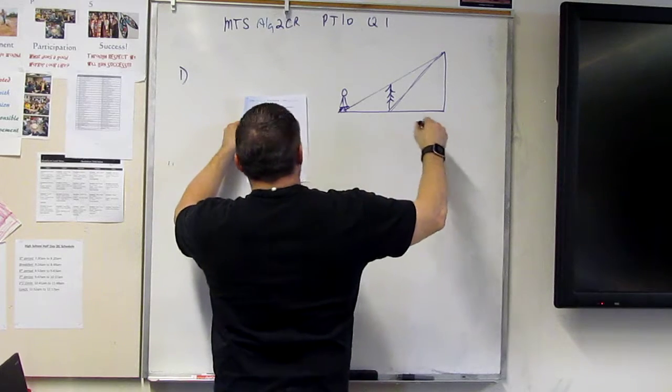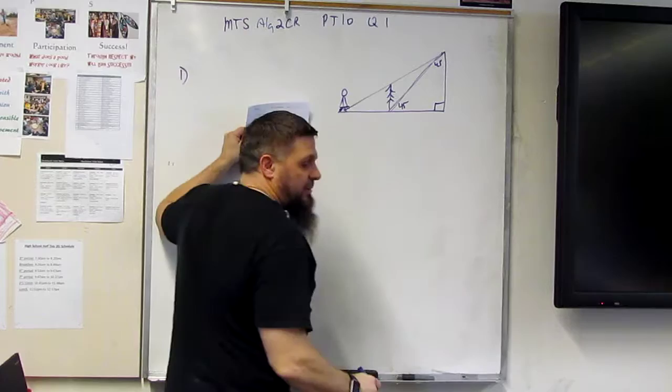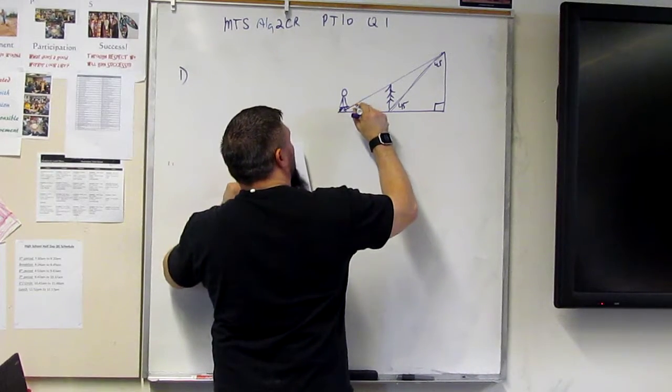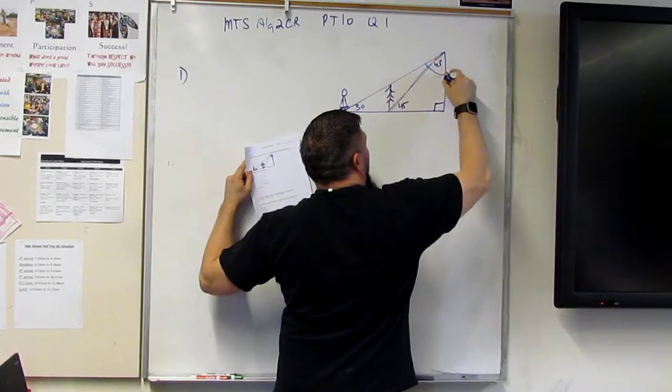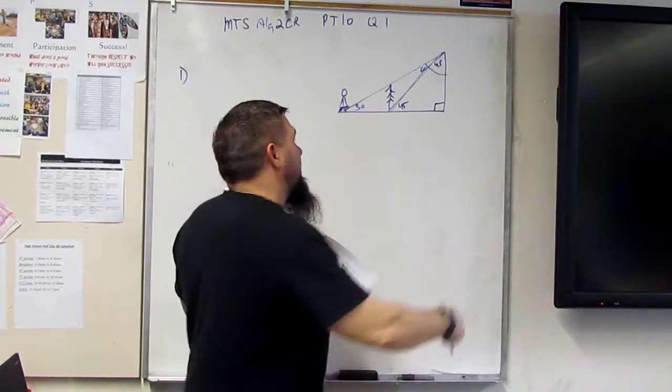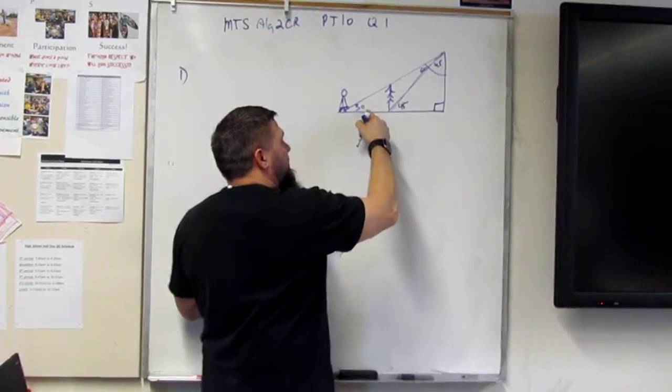And we've got a 45-45-90, right? And then we have the 30 and the 60, okay? So this one's 60, it's bigger than 45, right? And this one's 30.